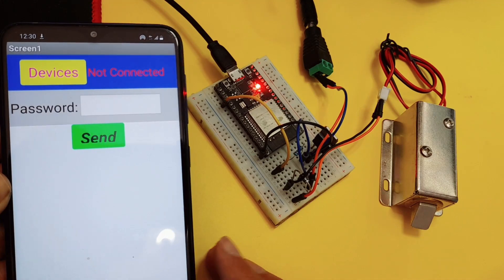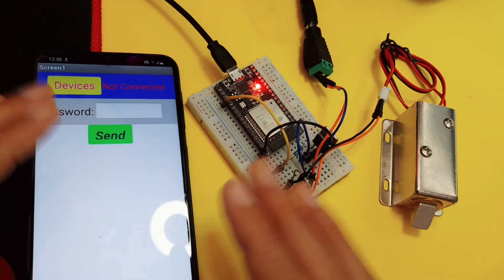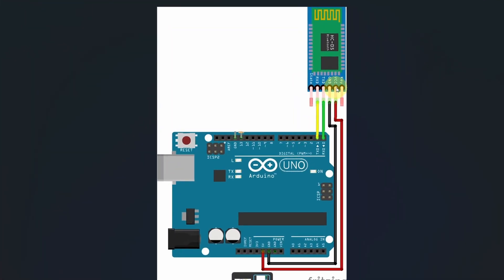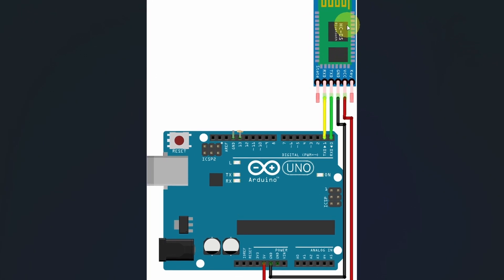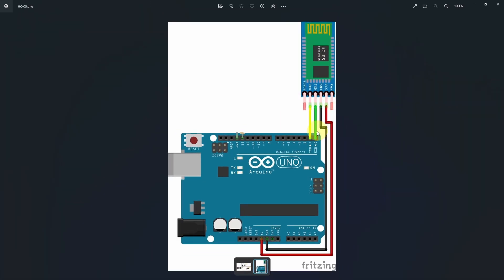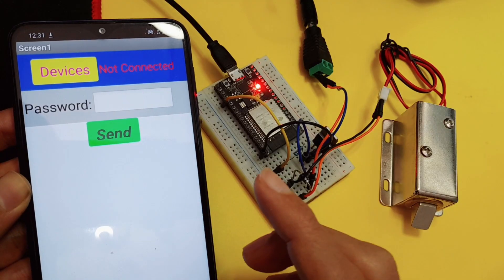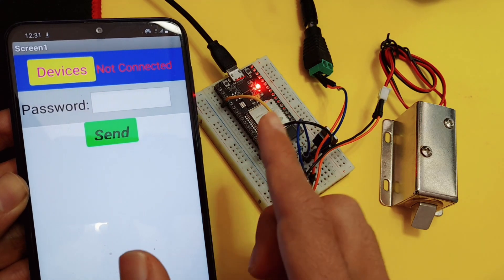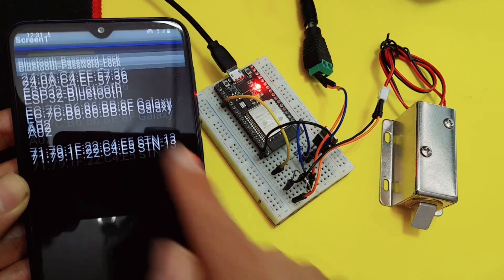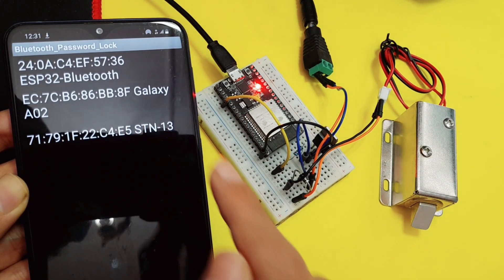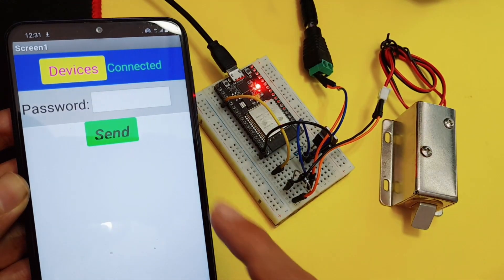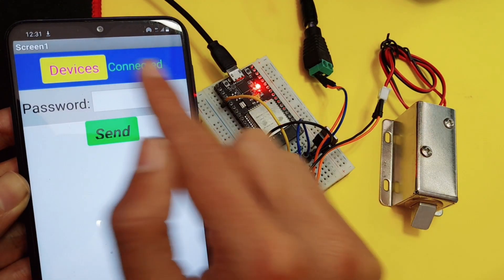You could also follow the same steps if you are using an Arduino board, but in that case you have to add a Bluetooth module like the HC05 and connect it accordingly. Then you will be able to connect to the Bluetooth device of the ESP32 microcontroller from devices and select ESP32 Bluetooth. And there you go — we have connected.